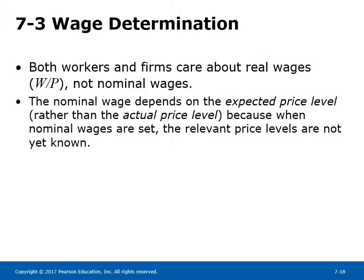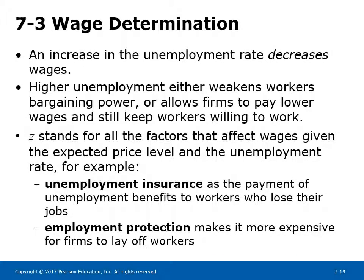Both workers and firms care about real wages, W over P, not nominal wages. The nominal wage depends on the expected price level rather than the actual price level because when nominal wages are set, the relevant price levels are not yet known. An increase in the unemployment rate decreases wages — higher unemployment either weakens workers' bargaining power or allows firms to pay lower wages while still keeping workers willing to work. Z stands for all the factors that affect wages given the expected price level and the unemployment rate, such as unemployment insurance benefits and employment protection, which makes it more expensive for firms to lay off workers.